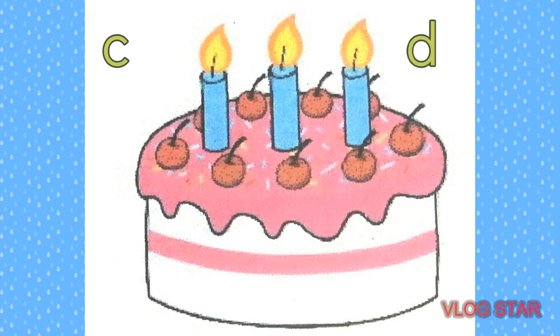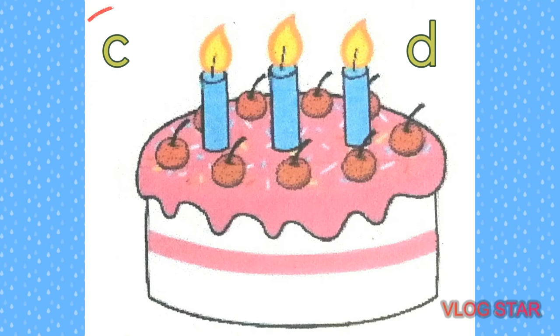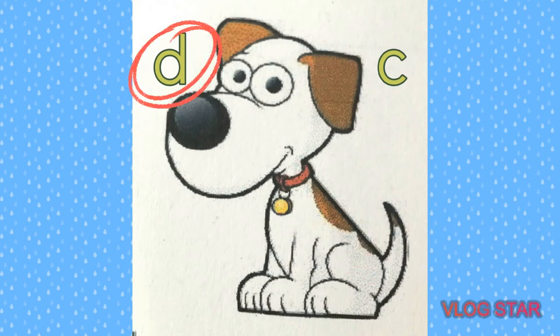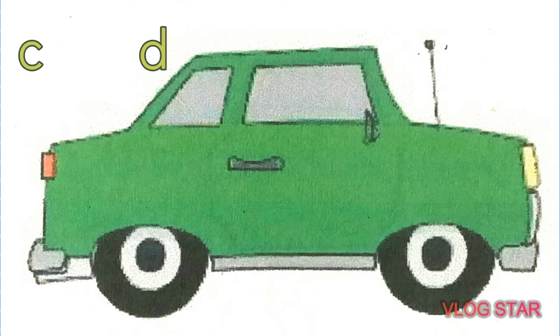Next is cake. K, K, cake — letter C or letter D? Yes, letter C. Dog — D, dog. Letter D or letter C? Correct, letter D. Next one is car. K, K, car — letter C or letter D? Right.